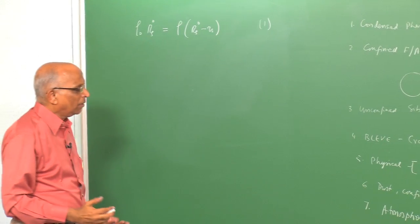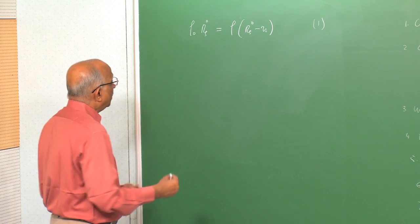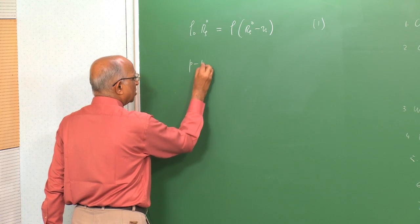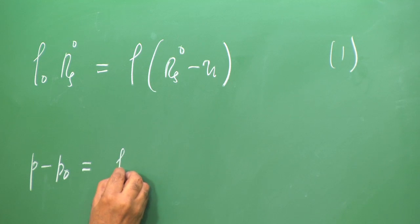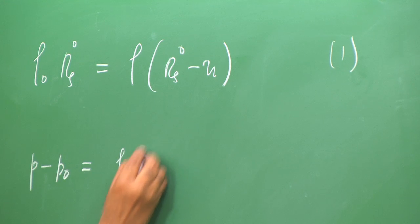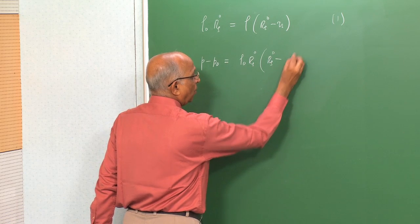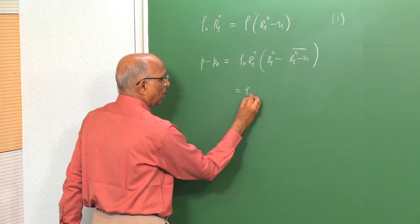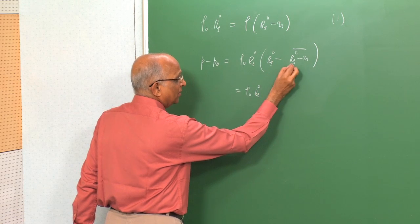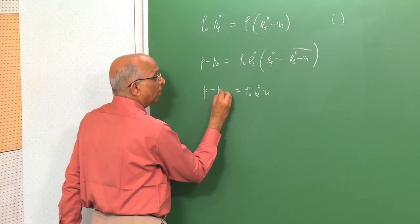For the momentum equation, the rate of change of momentum equals the impressed force. With unit surface area, the force is the pressure difference P − P₀. The momentum equation gives: P − P₀ = ρ₀ · R_s-dot · U, where ρ₀ · R_s-dot is the mass flux and U is the velocity change behind the shock. This is Equation 2.